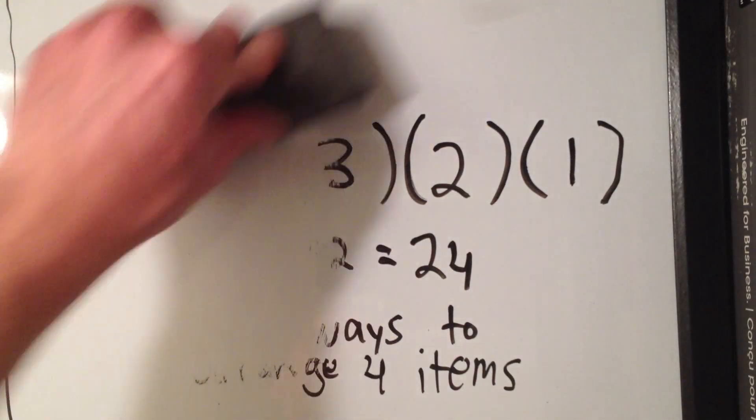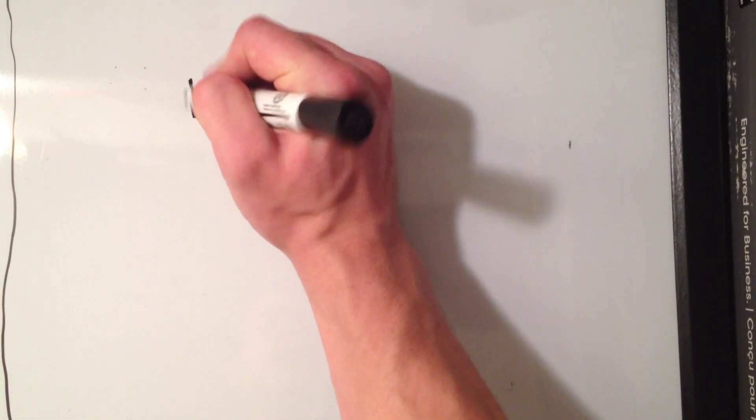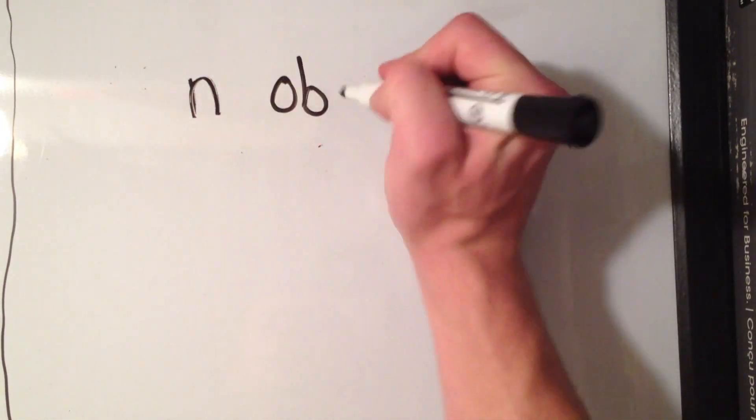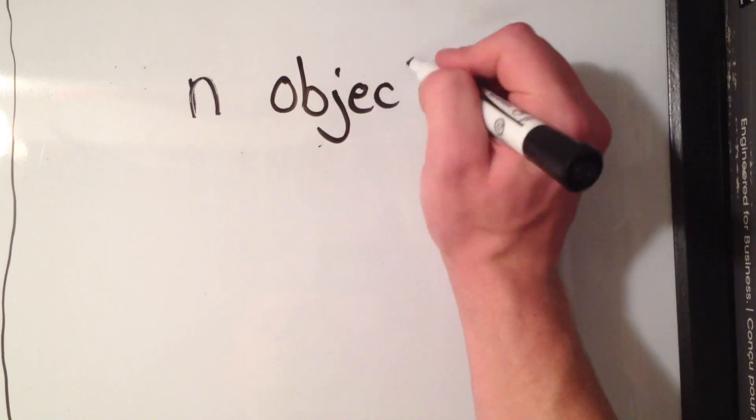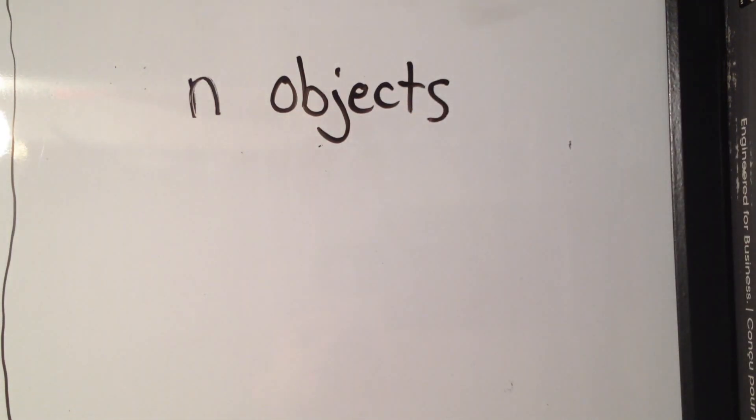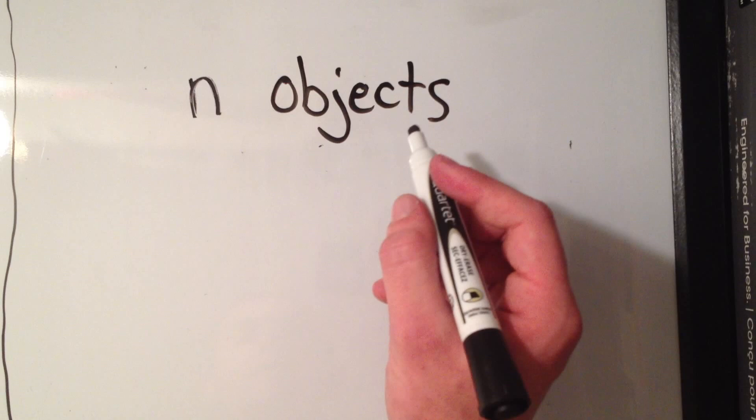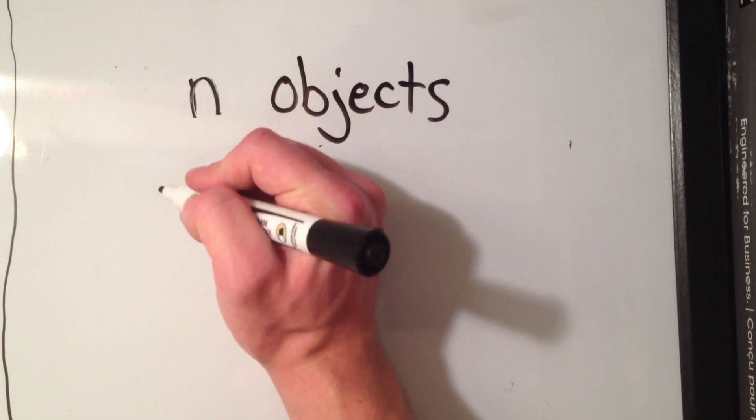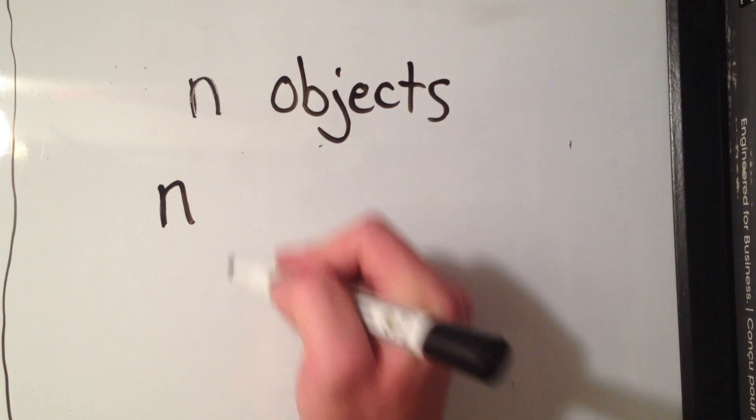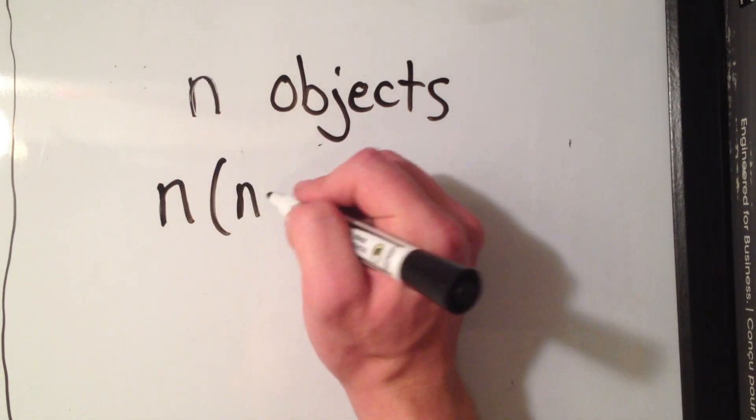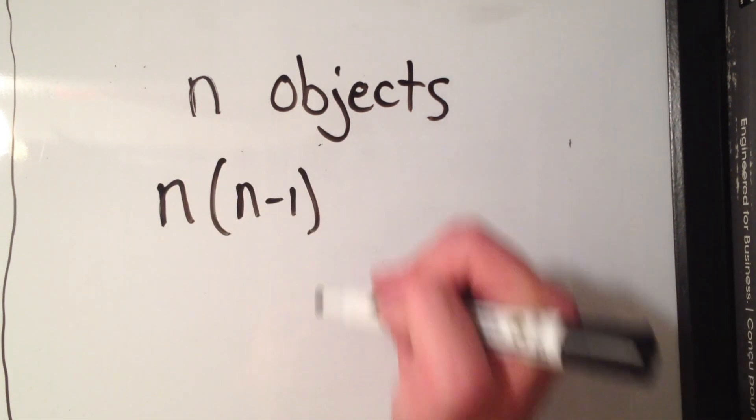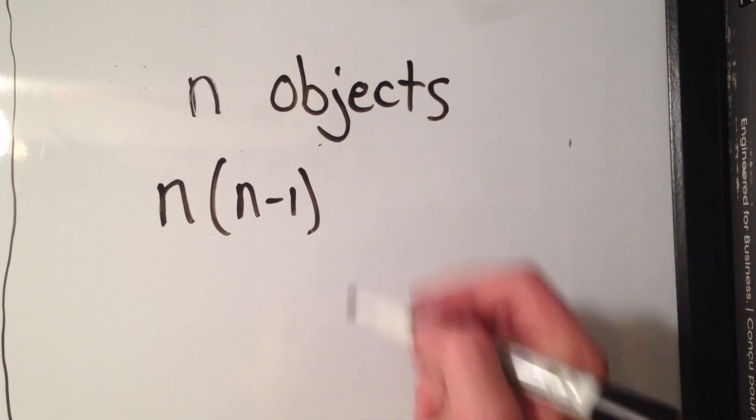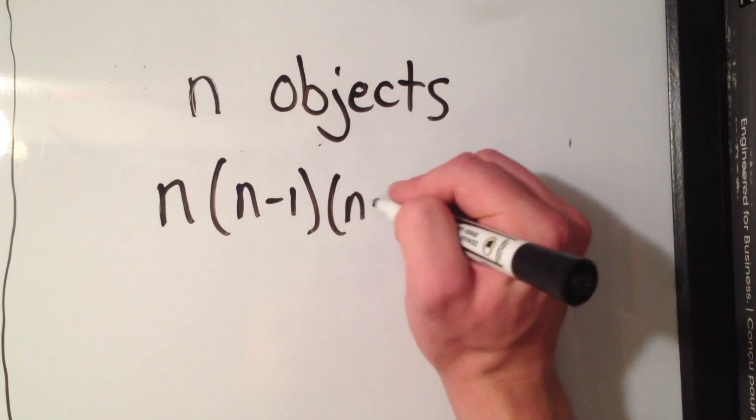So in general, if you have to arrange n objects, meaning any number, then the total number of ways to arrange n objects is n times n minus one times n minus two.